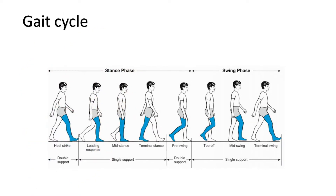The normal forward step consists of two phases: stance phase and swing phase. The stance phase occupies 60% of the gait cycle, during which one leg and foot are bearing most or all of the body weight. The swing phase occupies only 40% of it, during which the foot is not touching the walking surface and the body weight is borne by the other leg and foot.